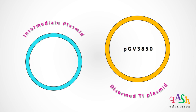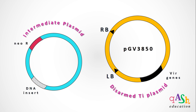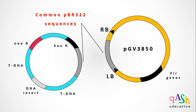This disarmed Ti plasmid contains the left-border and right-border sequences along with the vir genes that will catalyze the transfer. The intermediate plasmid carries the DNA insert along with the neomycin and kanamycin-resistant selectable markers. The remaining sequences on the intermediate plasmid are taken from the T-DNA region. Apart from the individual regions, both plasmids carry some common sequences which are taken from the pBR322 plasmid.